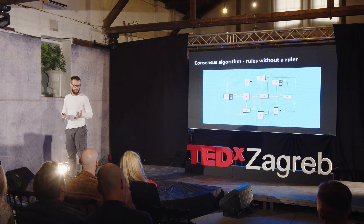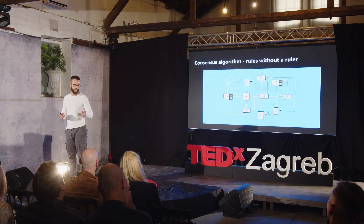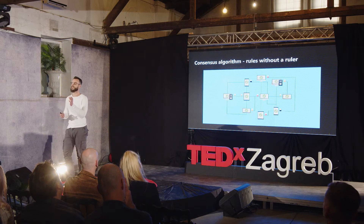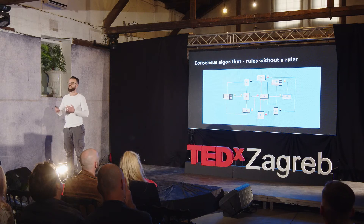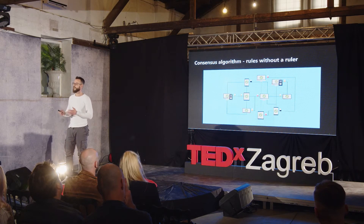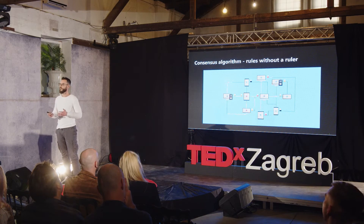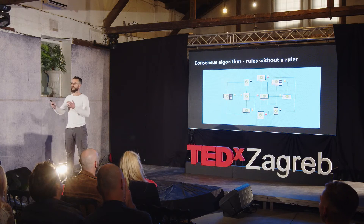We have computers that are completely distributed and entities that don't trust each other. How can some of these computers come to agreement — to consensus? Consensus is our set of rules without a ruler. For instance, let's say we're running a cryptocurrency ledger like a blockchain. The first device is adding a new block with transactions, with ownership exchange, and everything is synchronized to a network where entities don't trust each other and don't have to rely on trust. If you want to be part of a blockchain network, you need to follow the rules that the consensus algorithm gives you.